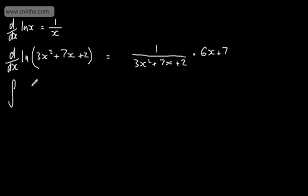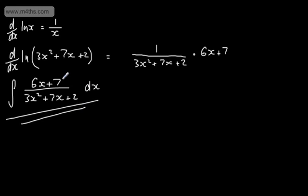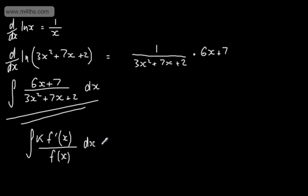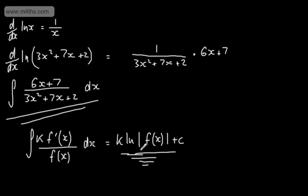Now let's look at the integral of this. If we had the integral of (6x plus 7) over (3x squared plus 7x plus 2), this suggests we'll get a log function as the answer. We can spot these because we have the derivative in the numerator and the original function in the denominator. In general, the integral of k·f'(x)/f(x) dx equals k·ln|f(x)| plus a constant. We take the modulus since we can't log negative numbers for real values.